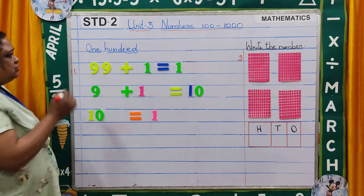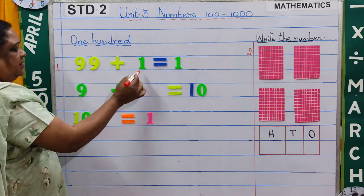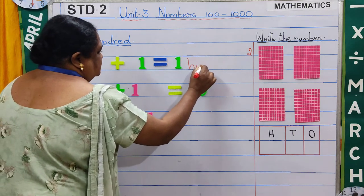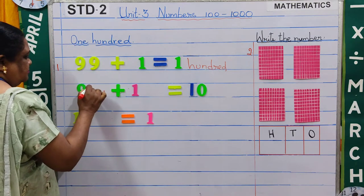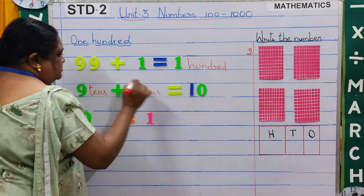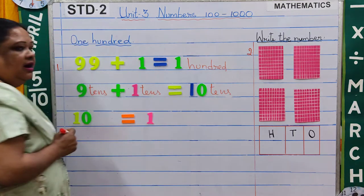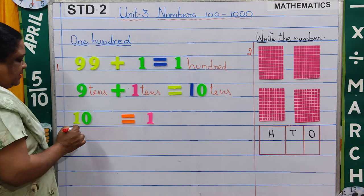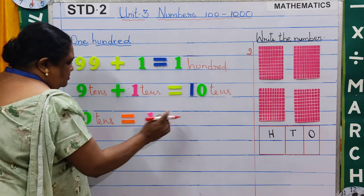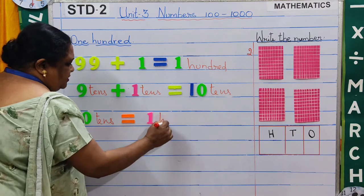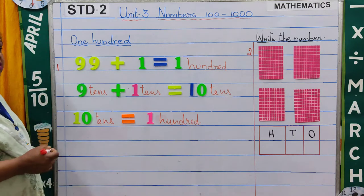Now let's come to the first one: 100. We can also write 100 as: 99 plus 1 is equal to 100. Also, 9 tens plus 1 ten is equal to 10 tens, which is also 100. And 10 tens is equal to 1 hundred. So you see children, all these add up to 100.